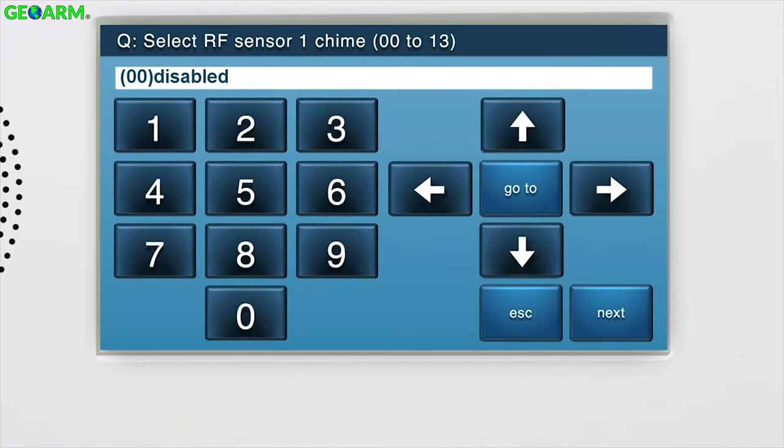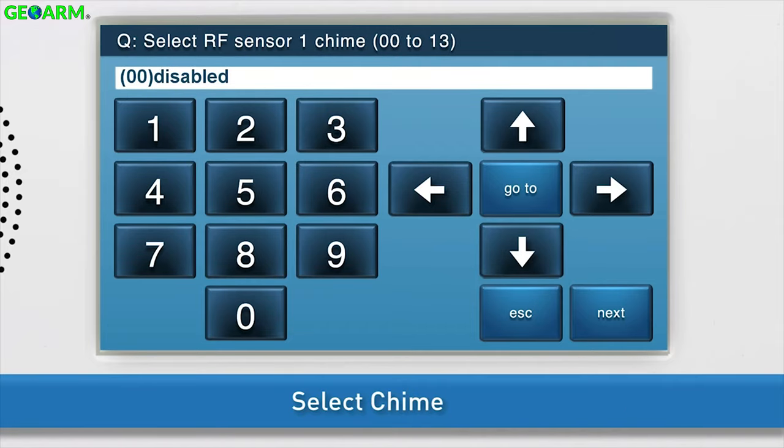Lastly, select the chime. For the carbon monoxide detector, you will want to leave the chime at the default option, which is 00 disabled. Press the down arrow to go to the Summary page.